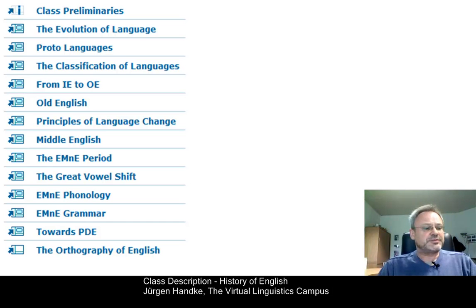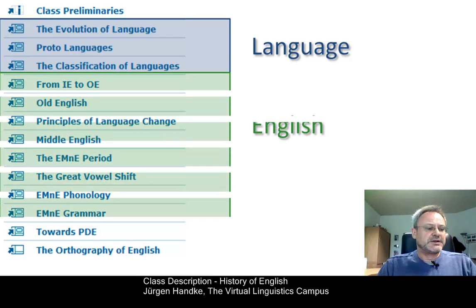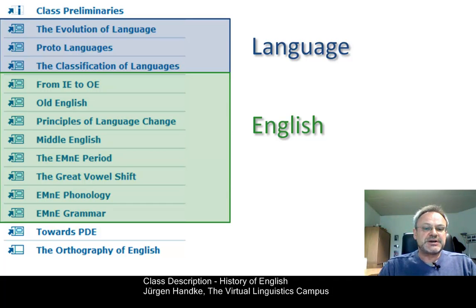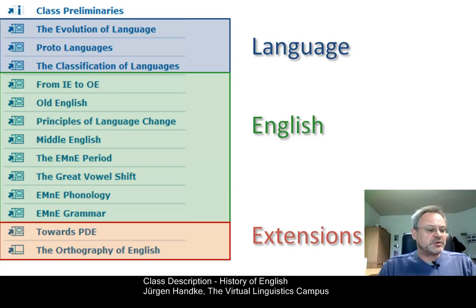The class is subdivided into three central parts. In order to understand the development of English, we will first look at the central principles of reconstructing and classifying languages. The second part is devoted to the discussion of the developmental phases of English and their central linguistic aspects. Since this class addresses future teachers of English, special emphasis is laid on early modern English phonology, including a detailed discussion of the great vowel shift, one of the most influential sound shifts that affected the English language. The remaining part looks at recent developments with a final focus on present-day English orthography.